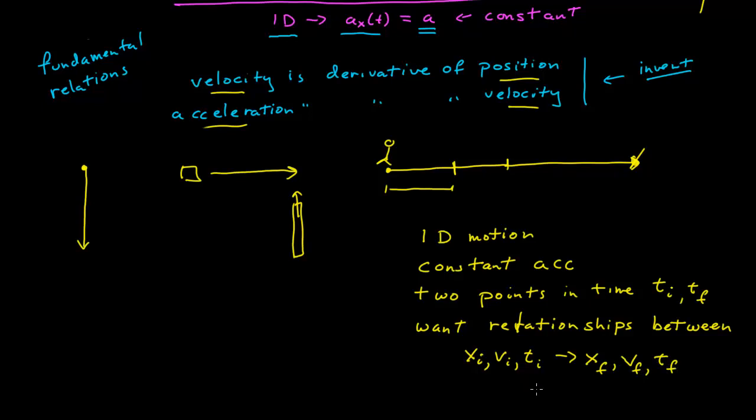Now, of course, the initial acceleration and final acceleration is the same given constant acceleration. We could invoke these conditions, go back to our fundamental relations, and derive all the relationships we want for each specific example. However, what I'd like to do is just derive those relationships once, and then we can use those for any problem where we have constant acceleration.